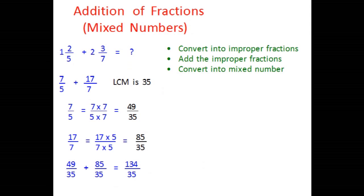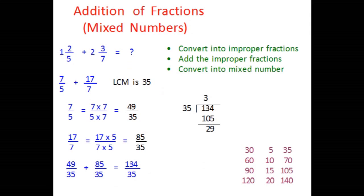Now 134 needs to be divided by 35 to convert it back to a mixed number. We may not know the 35 times table directly, but we know the 30 times table and the 5 times table. Table of 30: 30, 60, 90, 120. Table of 5: 5, 10, 15, 20. So the table of 35 would be 35, 70, 105, 140. Since 35 times 3 is 105, subtract 105 from 134 — the remainder is 29. So the equivalent mixed number is 3 and 29 over 35, where 3 is the quotient (whole number), 29 is the remainder (numerator), and the denominator remains 35.